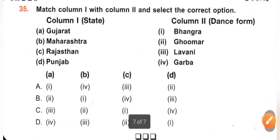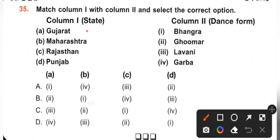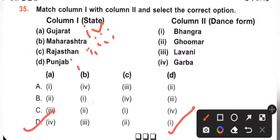Question 35: Match column 1 with column 2 and select the correct option. Gujarat — dance form is Garba, so A-4. Maharashtra — dance form is Lavani, so B-3. Rajasthan — dance form is Ghoomar, so C-2. Punjab — dance form is Bhangra, so D-1. Therefore A-4, B-3, C-2, D-1. Option D is the correct answer.